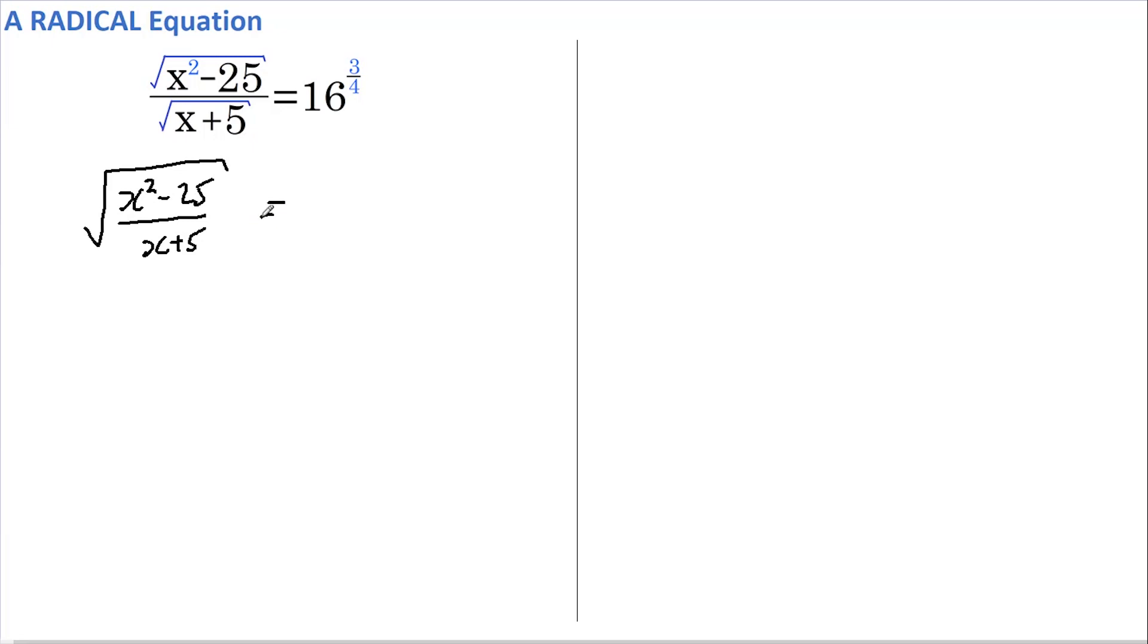And on the right-hand side, I'm going to rewrite this as 16 to the power of 3 multiplied by 1 quarter. And now, to get rid of the square root sign, I'm going to square this side, and I'm also going to square this side.